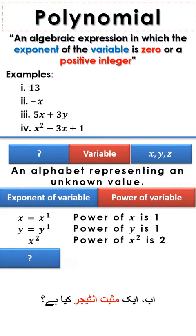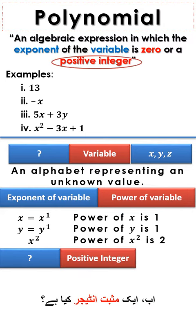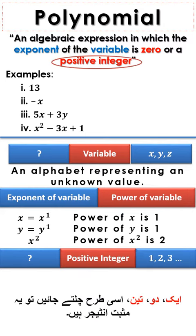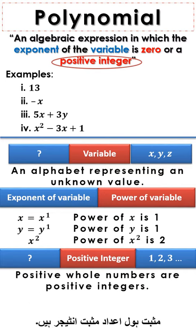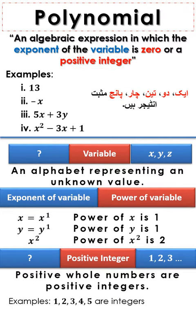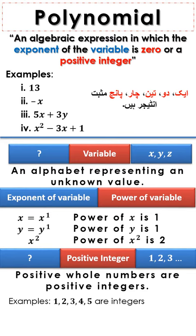What is a positive integer? 1, 2, 3, up to so on are positive integers. Positive whole numbers are positive integers. Examples are 1, 2, 3, 4, 5 are positive integers.